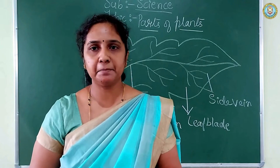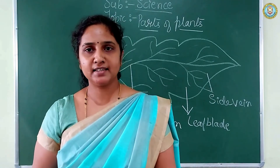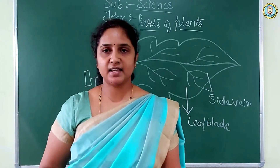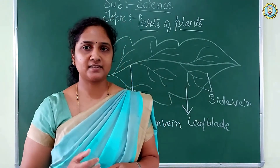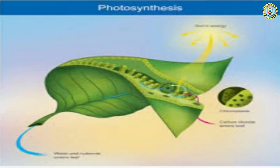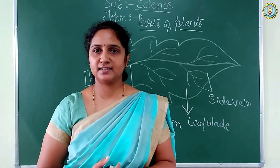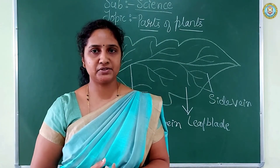Children, do you know why plants are green in color? Plants are green in color because there is a substance present in the leaf called chlorophyll. It gives green color to the plant. If you observe this image of a plant, you will understand it clearly. Now let's discuss the functions of leaves.